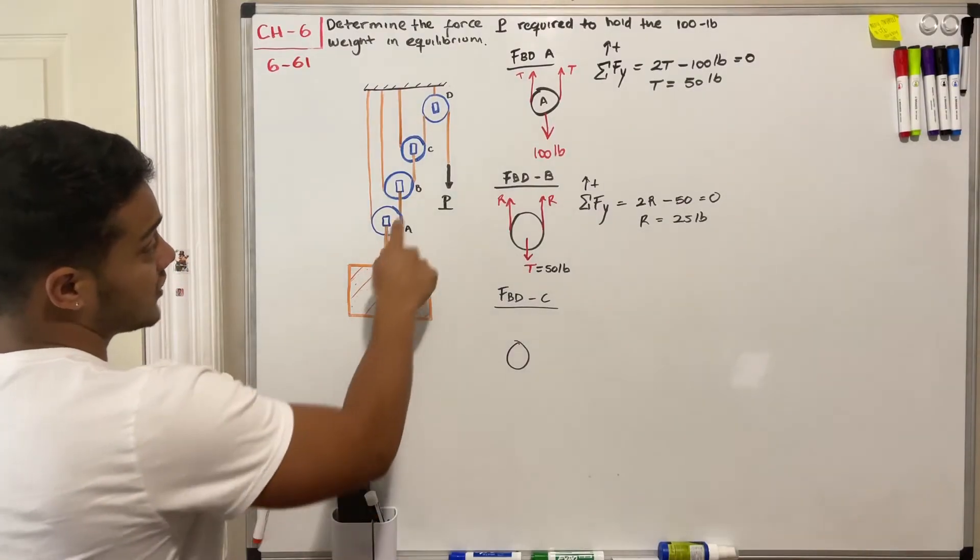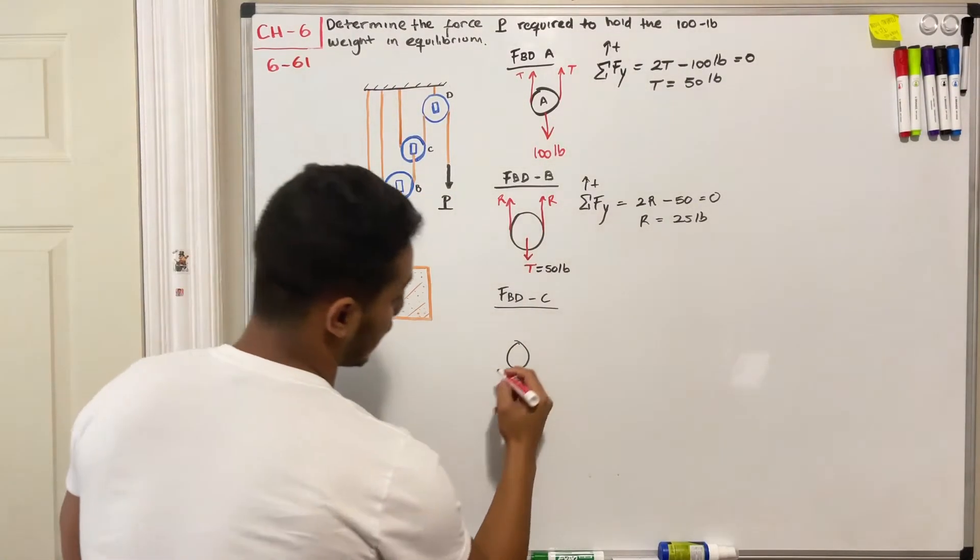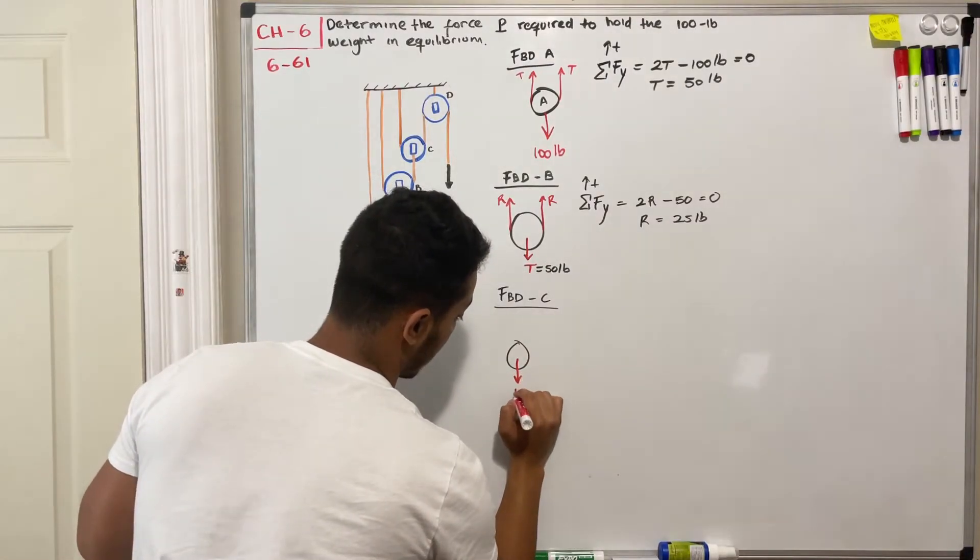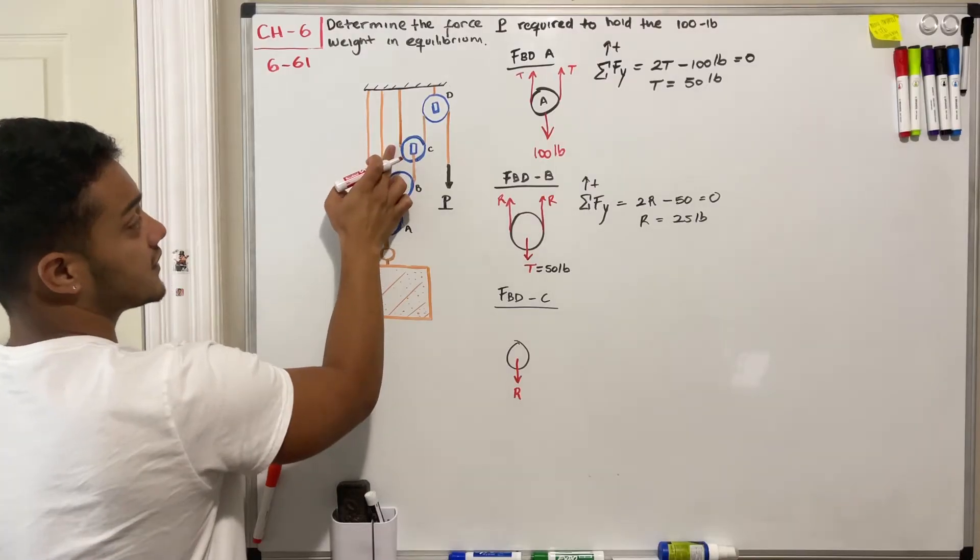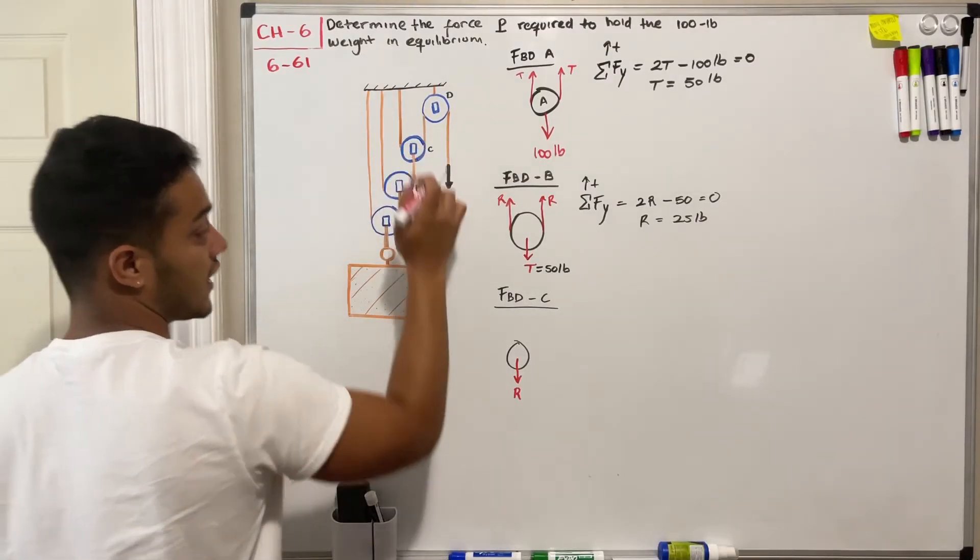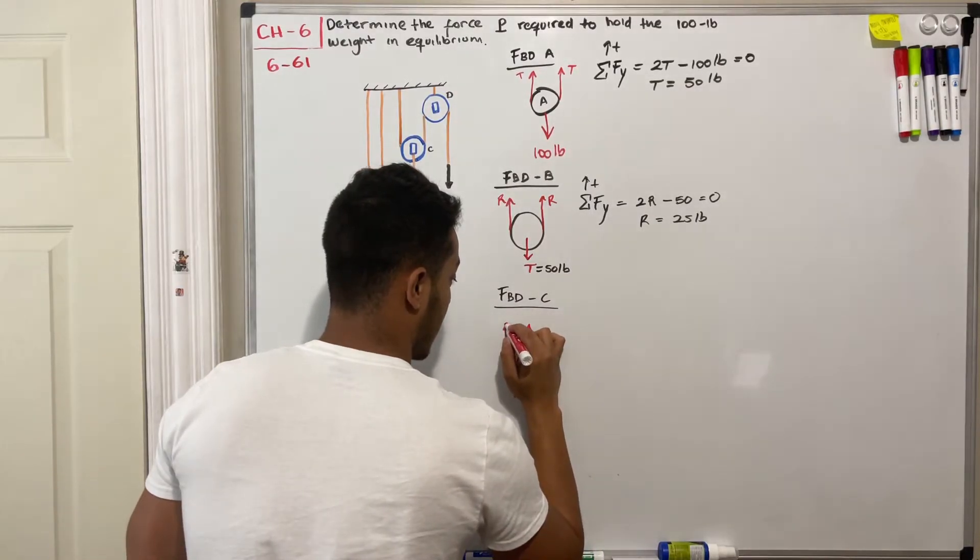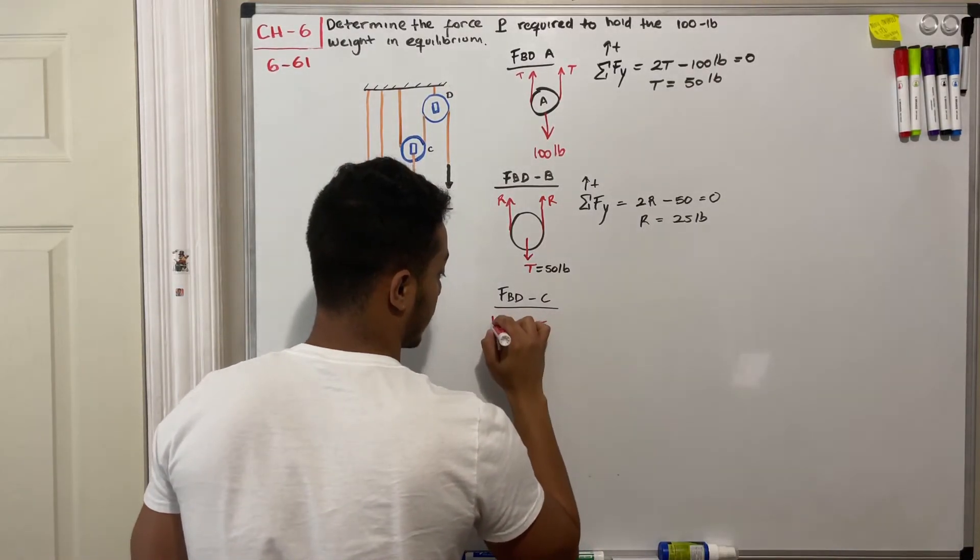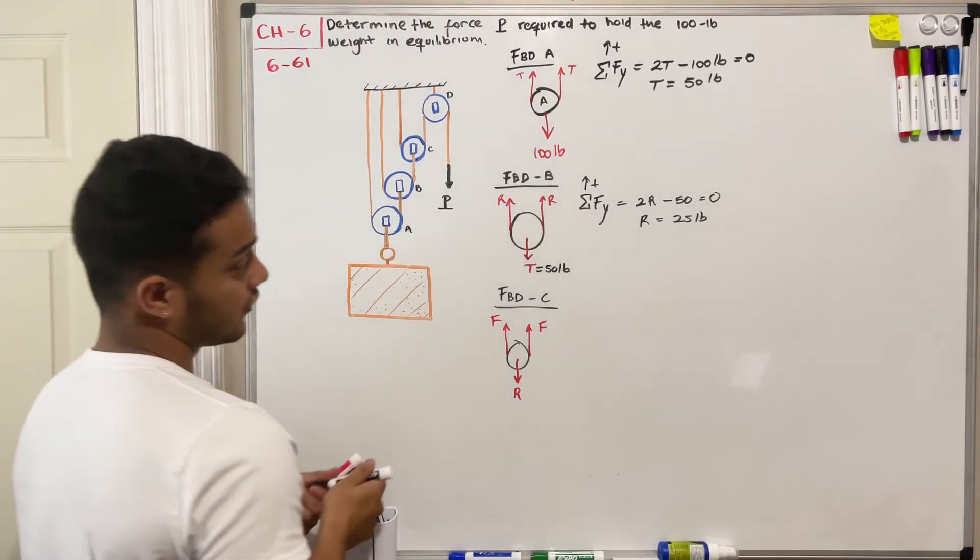I got the tension coming from B that we call R, so this guy over here going down. We'll have R going down, then we will have these tensions going up from the sides. Let's call them F for force, since these tensions are forces.